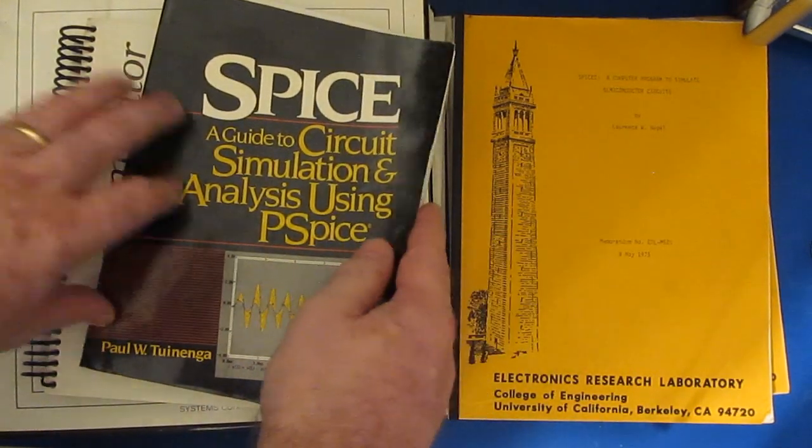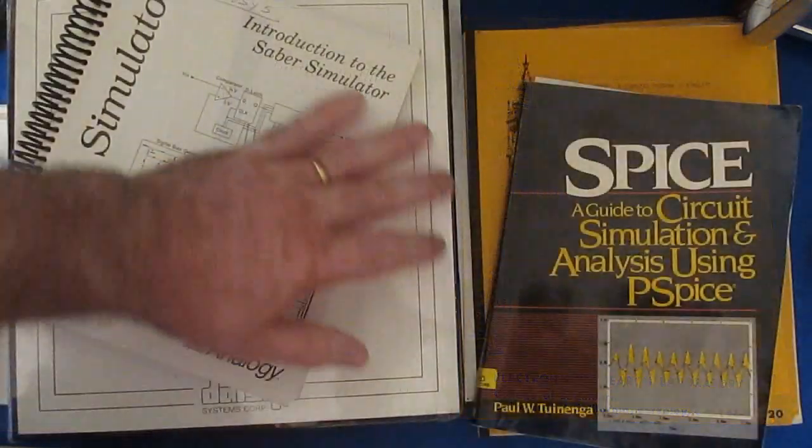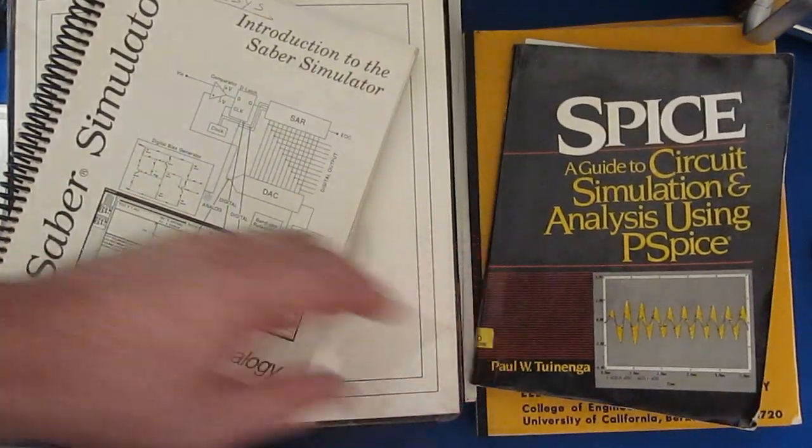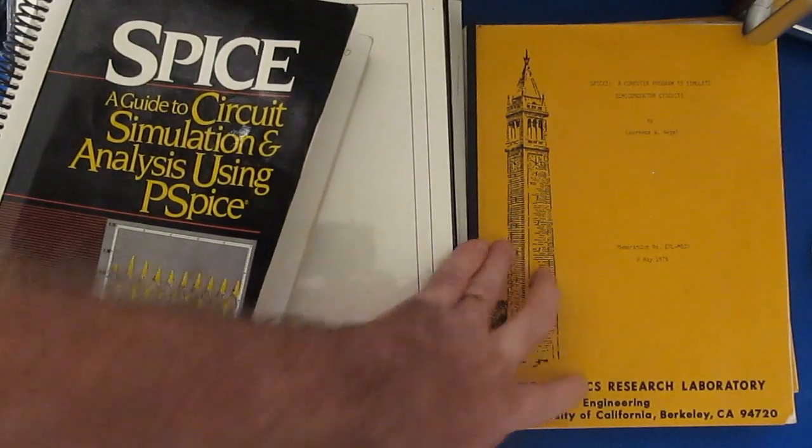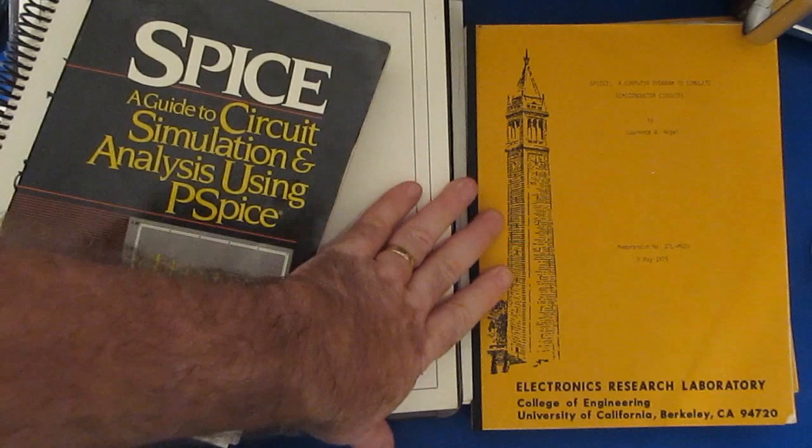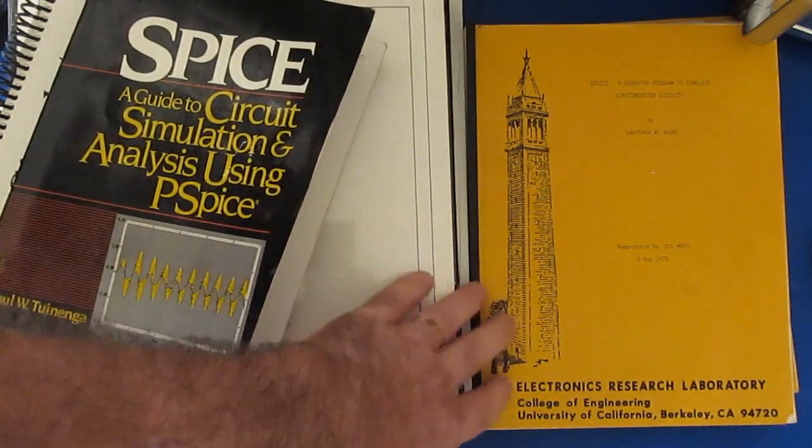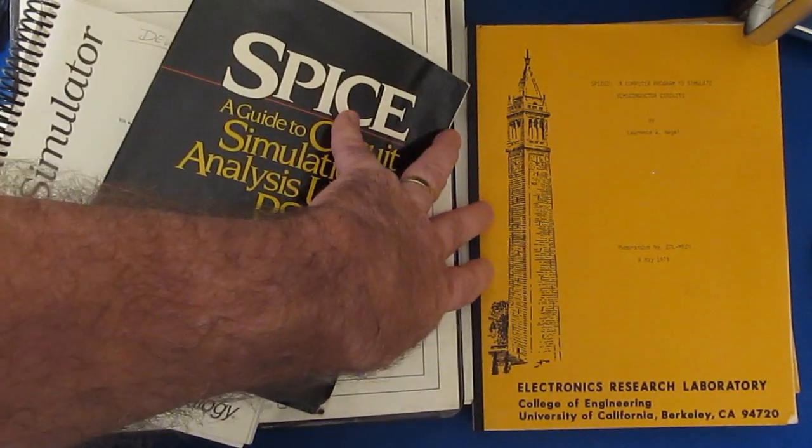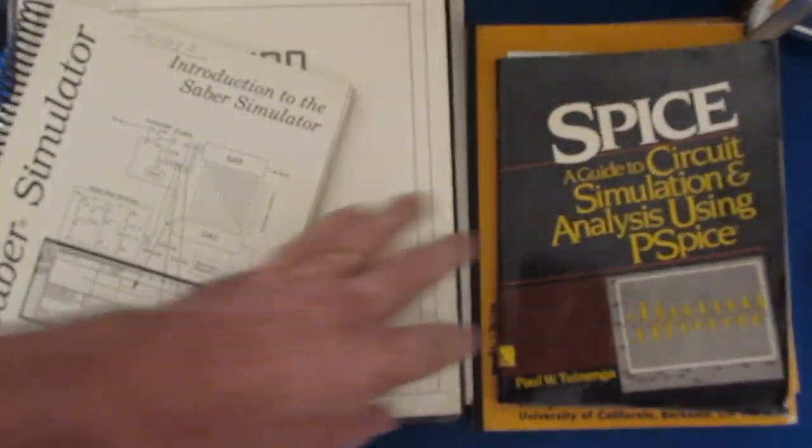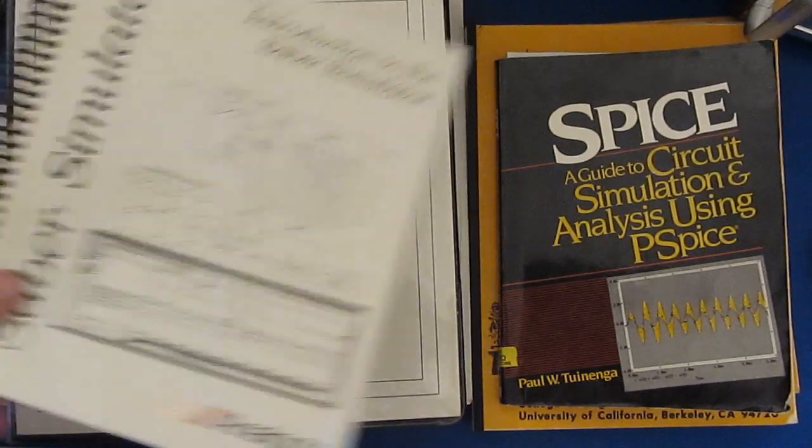They had a laser burn diskette that you would have to have installed in the machine. And that was essentially their software security for it. I remember PSPICE actually being quite expensive when we first purchased it. SPICE 2 would actually run on the PC. There wasn't the graphical front end. You would just enter your netlist in text form. And the graphs would produce were ASCII.